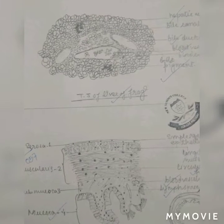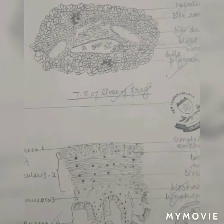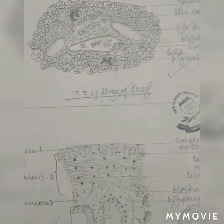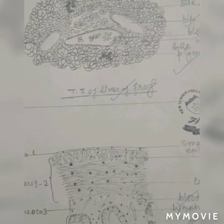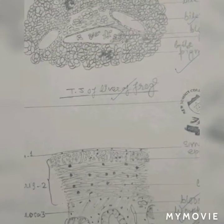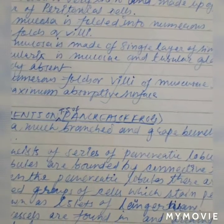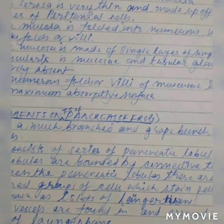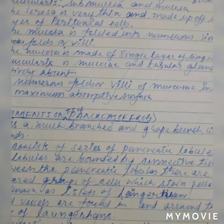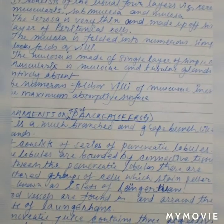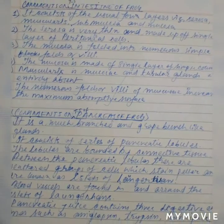The outer longitudinal muscle fibers are thin and the inner circular muscle layer is thick. The sub-mucosa lies below the muscular layers and is composed of a thick and broad layer of loose connective tissue fibers. The mucosa is thrown up into folds which give rise to secondary folds. Thank you.